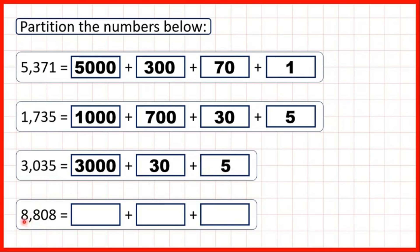Now, eight thousand, eight hundred and eight. This eight in our thousands stands for eight thousand. We have an eight in our hundreds, so that's eight hundred. We have a zero in our tens, so we don't need to partition that. And then we have an eight in our ones, which just stands for eight.